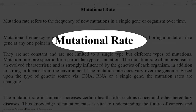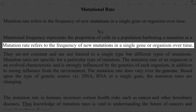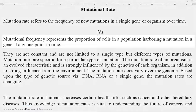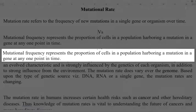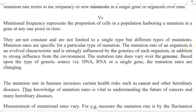The next part of the lecture is related to mutational rate. Mutational rate refers to the frequency of new mutations in a single gene or an organism over a period of time. Mutational frequency represents the proportion of cells in a population harboring a mutation in a gene at any given point in time. Different types of mutations occur in an organism, and mutation rates are specific for a particular type of mutation.